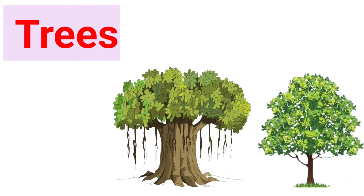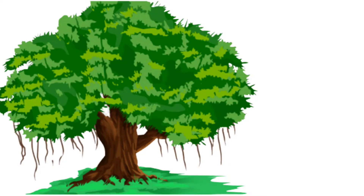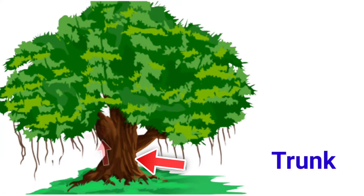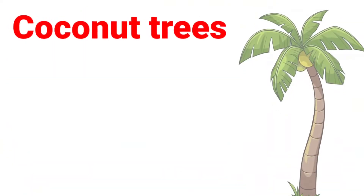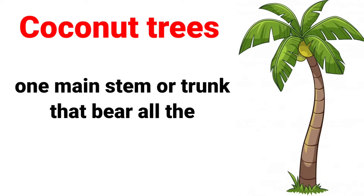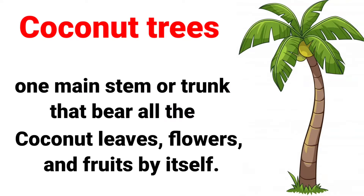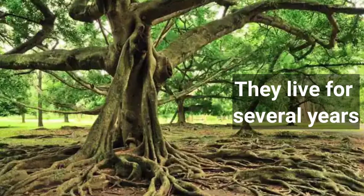Trees. Very big plants are called trees. They have very thick, woody and hard stems which are known as the trunk. The trunk of a tree gives rise to many branches that bear leaves, flowers and fruits. Some trees like coconut have only one main stem or trunk that bears all the coconut leaves, flowers and fruits by itself. Trees have a very large lifespan and live for several years.